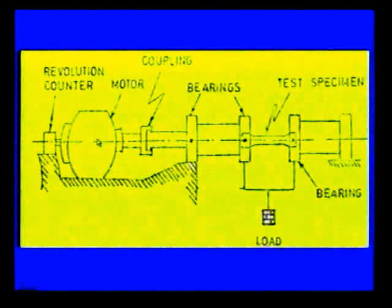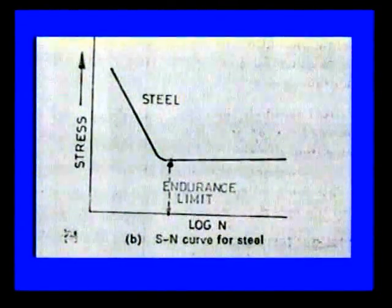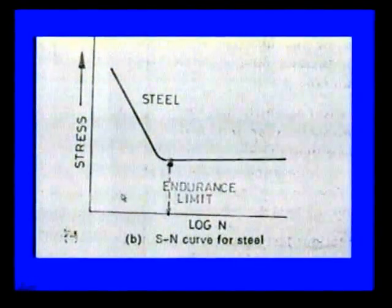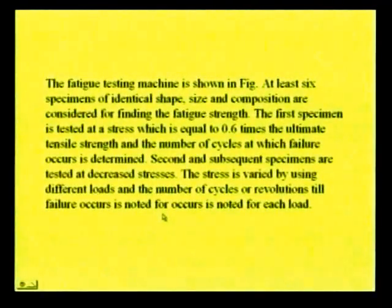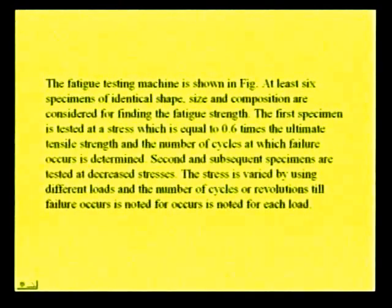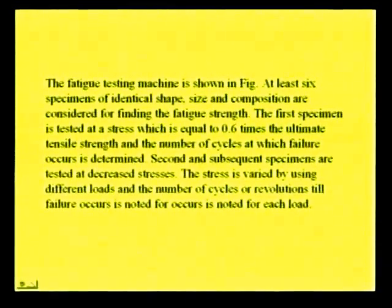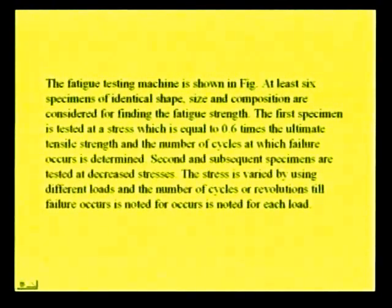The S-N curve shows the relationship between stress and number of cycles for steel. At least 6 specimens of identical shape, size, and composition are used for finding the fatigue strength. The first specimen is tested at a stress equal to 0.6 times the ultimate tensile strength and the number of cycles at which failure occurs is determined. Subsequent specimens are tested at decreased stresses, with the stress varied by using different loads, and the number of cycles or revolutions until failure is noted for each load.